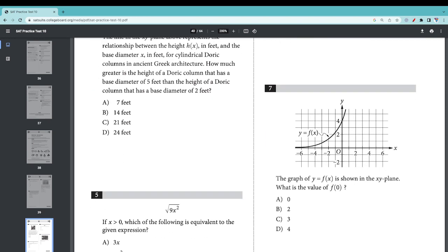Number 7: The graph of y equals f(x) is shown in the xy plane. What is the value of f(0)? When x equals 0, you're going to a value of 4, so the answer is D.